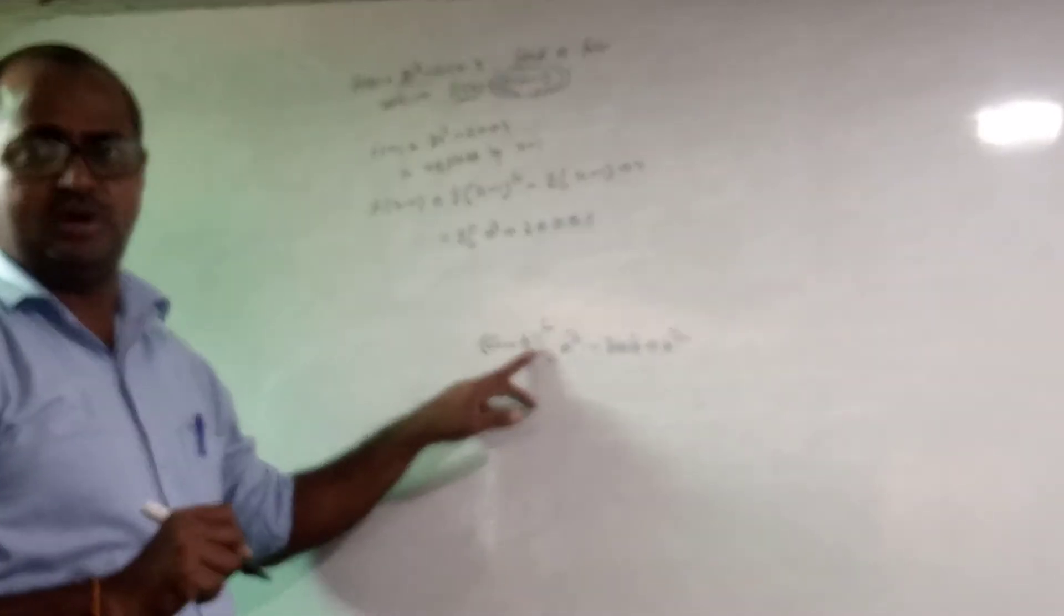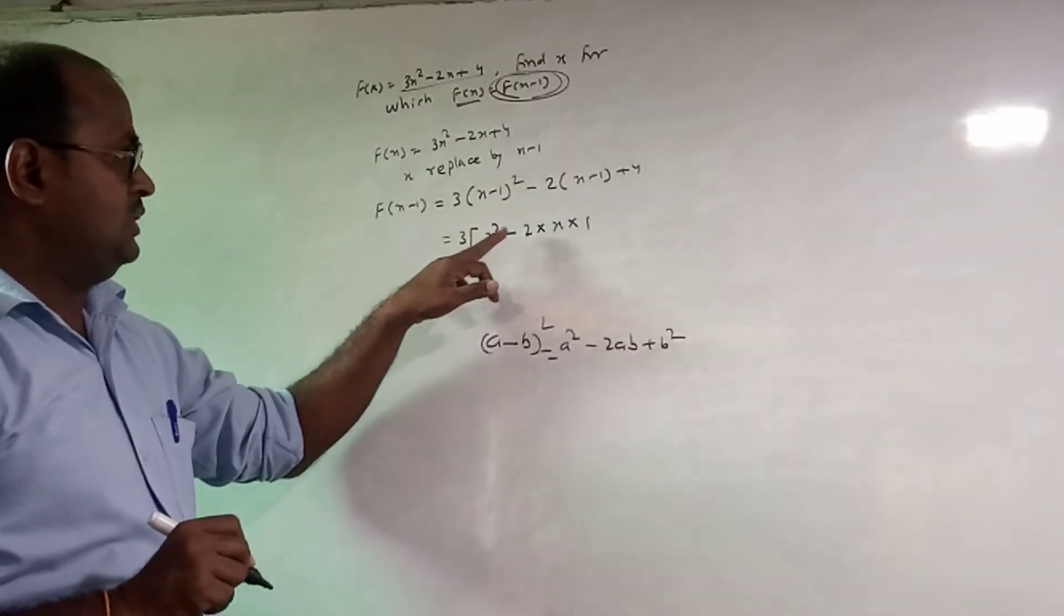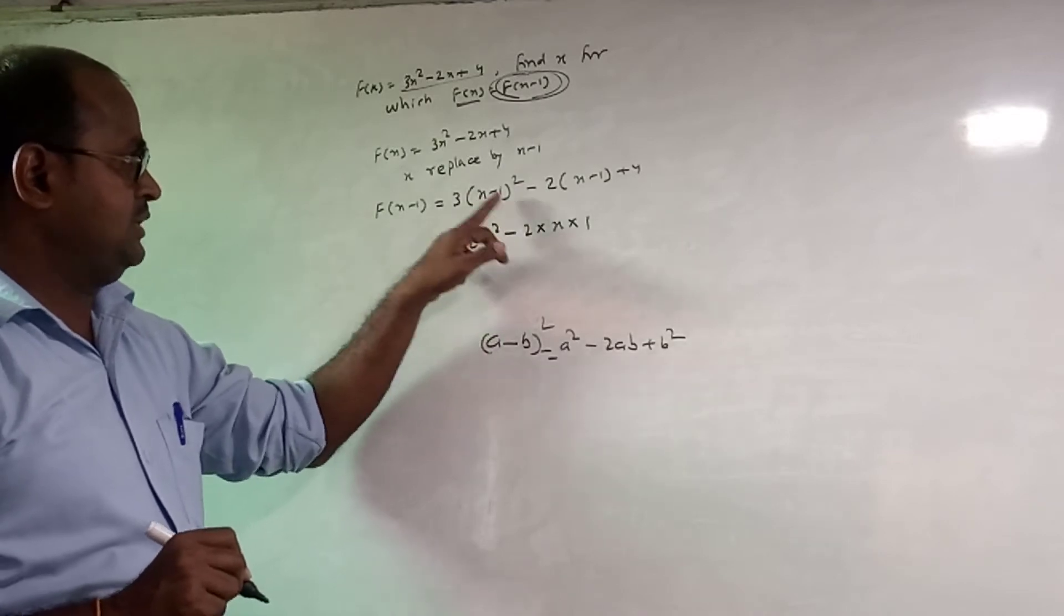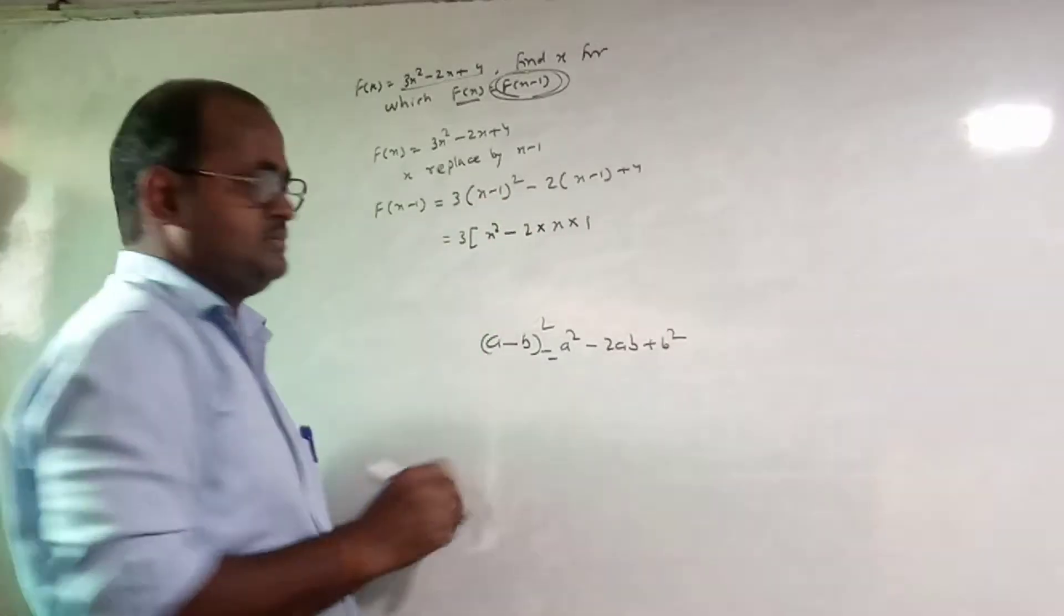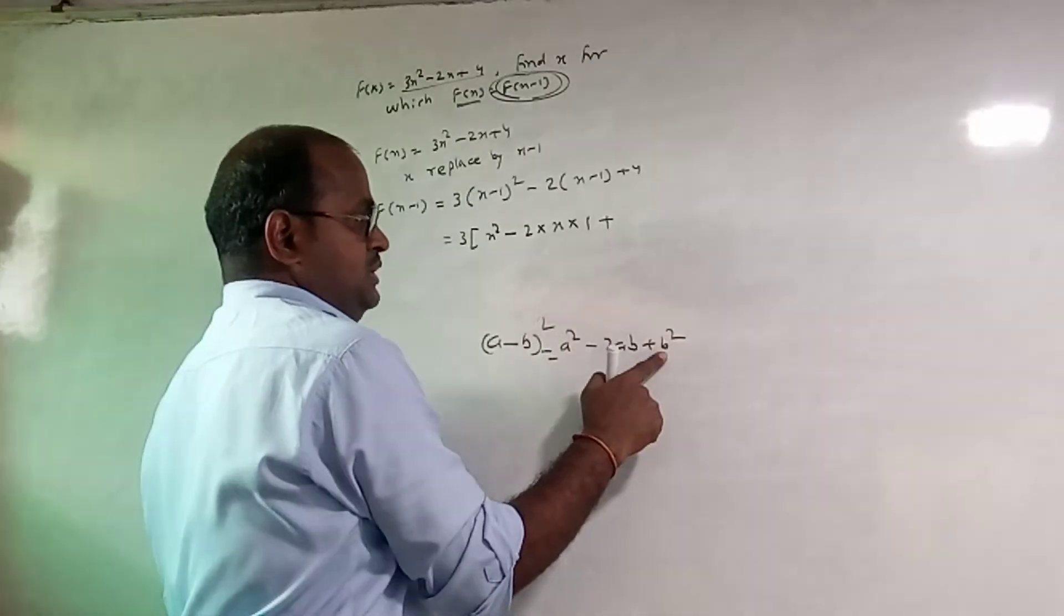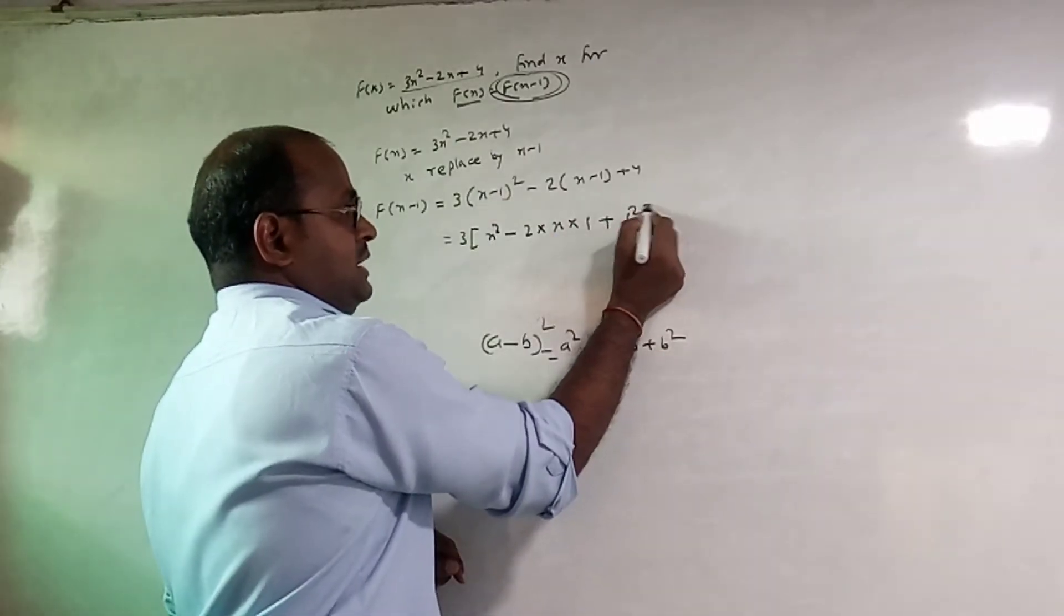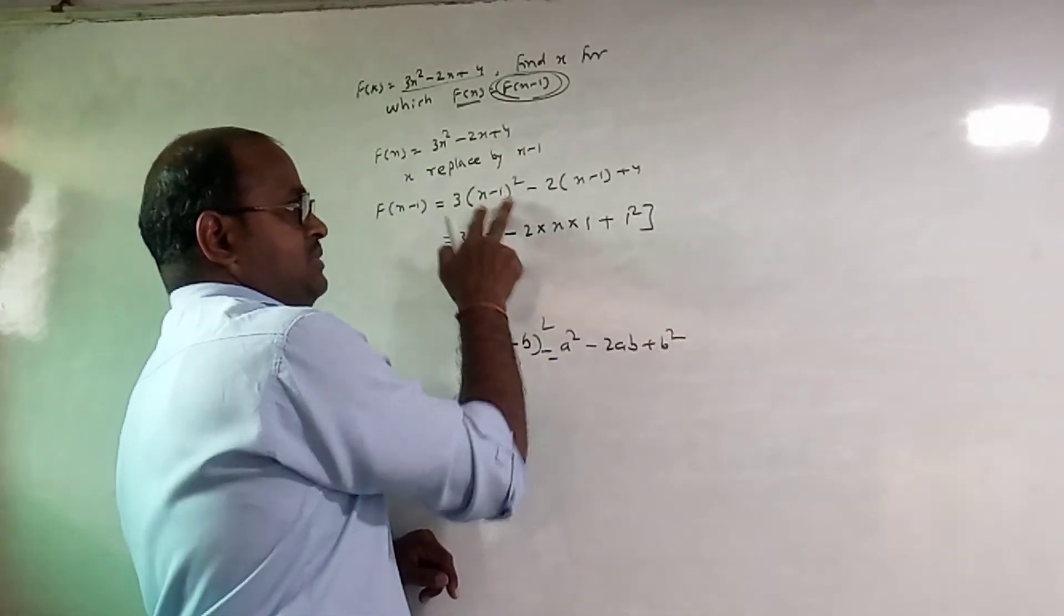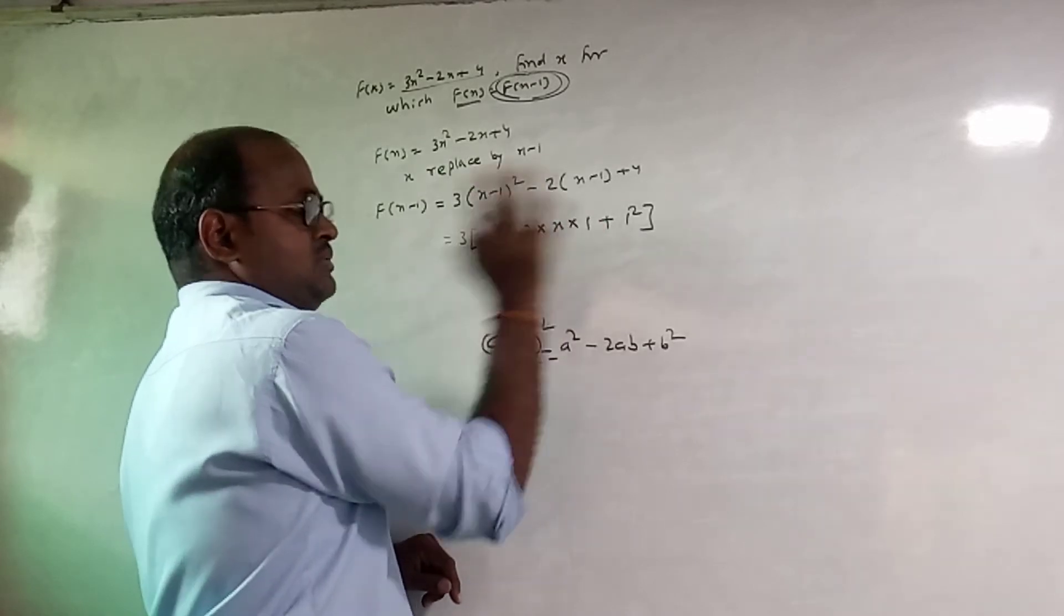a minus b is equal to square minus 2 into pi into this. Plus c is equal to 1 square. a minus b is equal to square: a square minus 2ab plus b square.